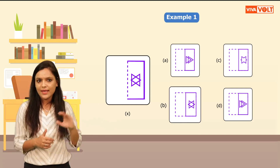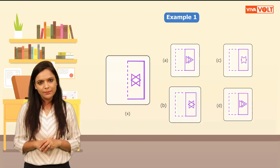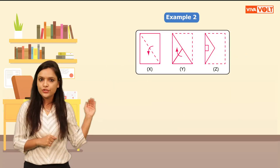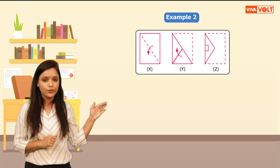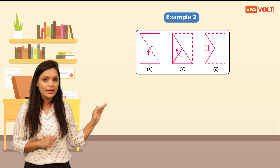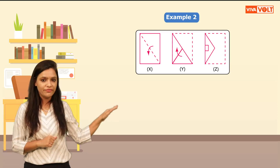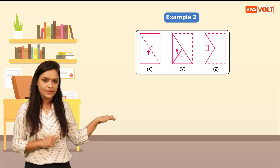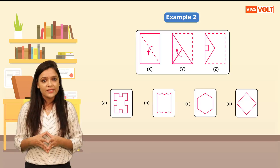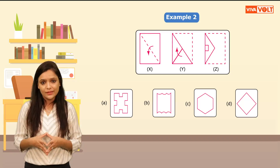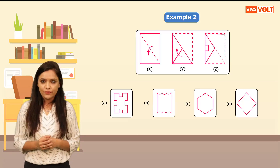Let's look at another example: choose the correct figure that would most closely resemble the unfolded form of the figure set. Here are the options. We will get to know better when we do this. Let's start folding this paper.